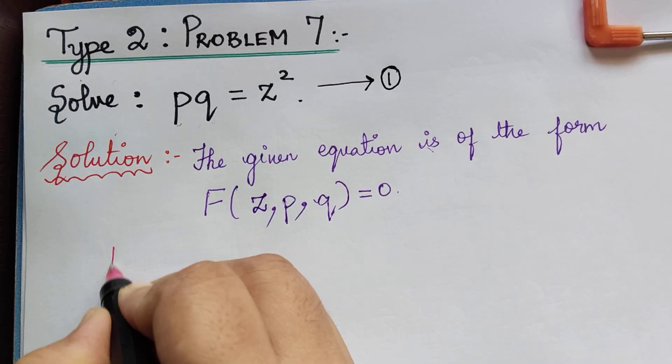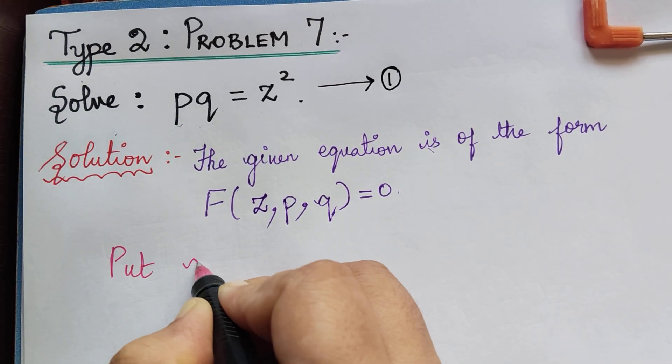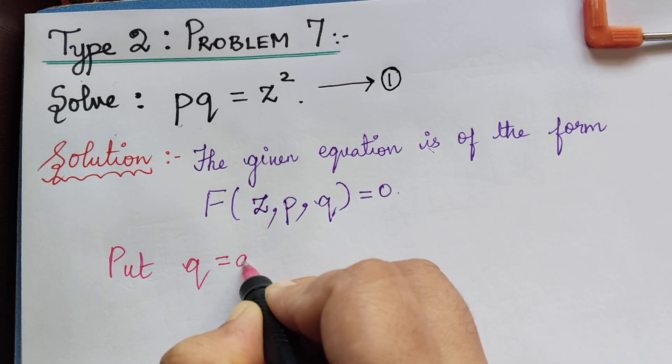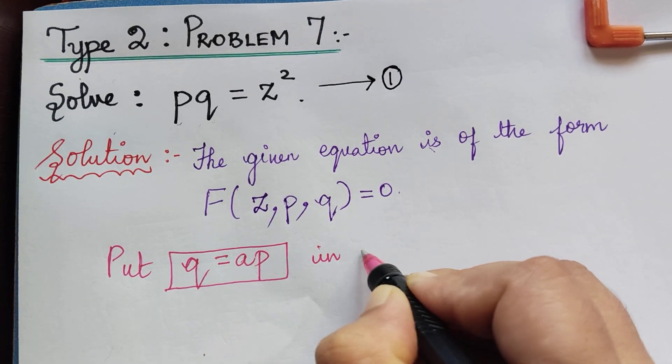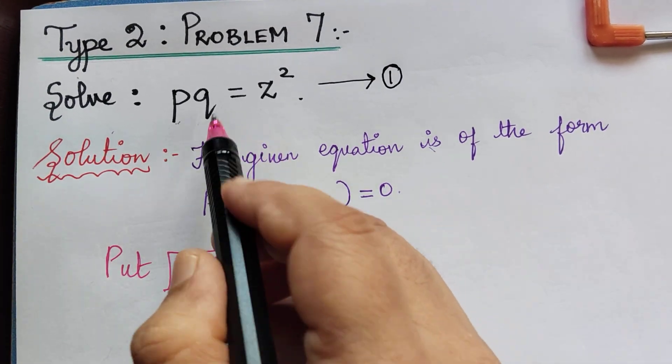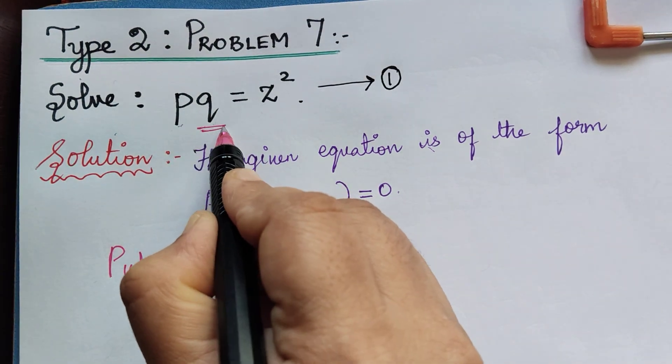We have to put Q = AP in equation 1. So wherever we have Q, we replace it by AP.